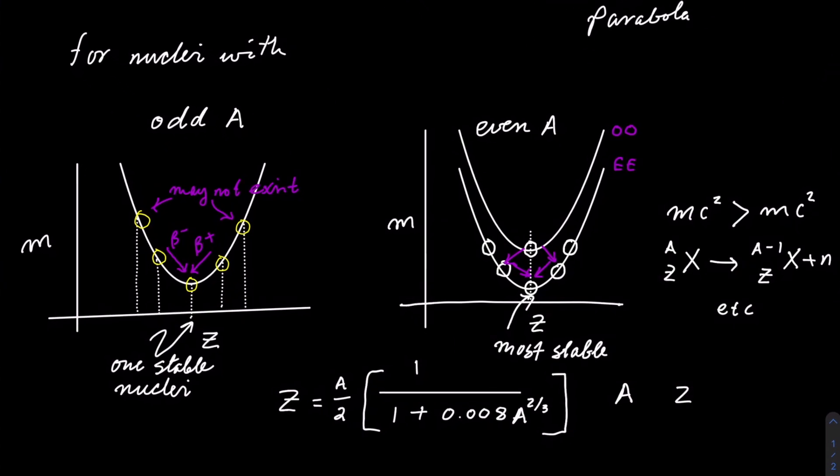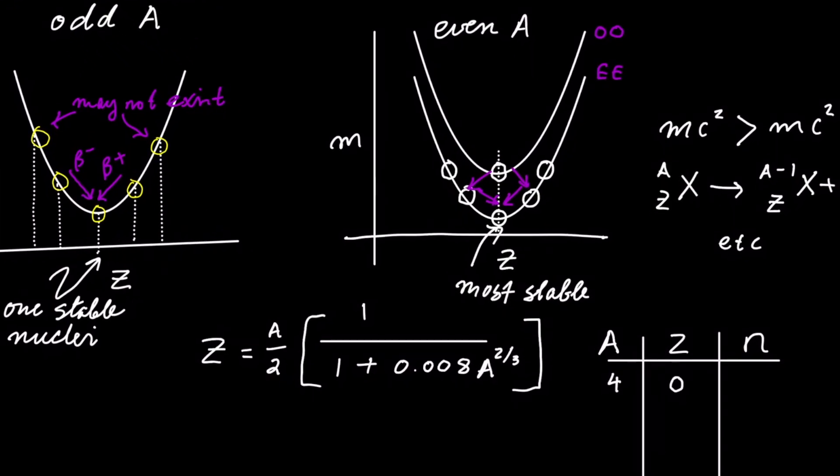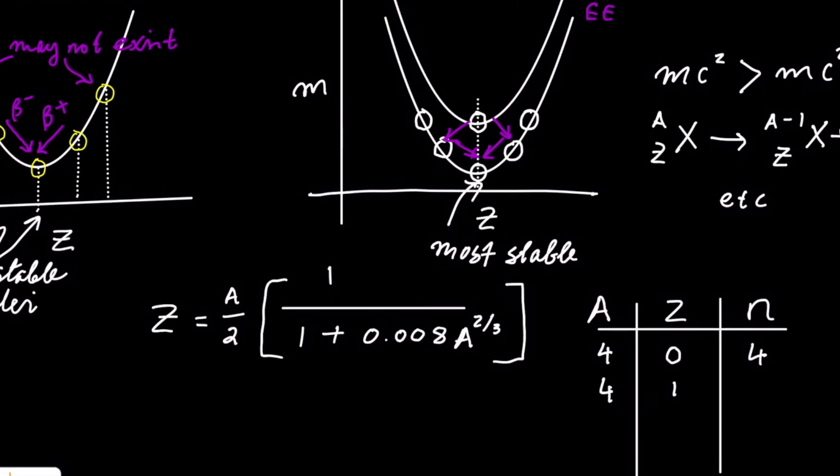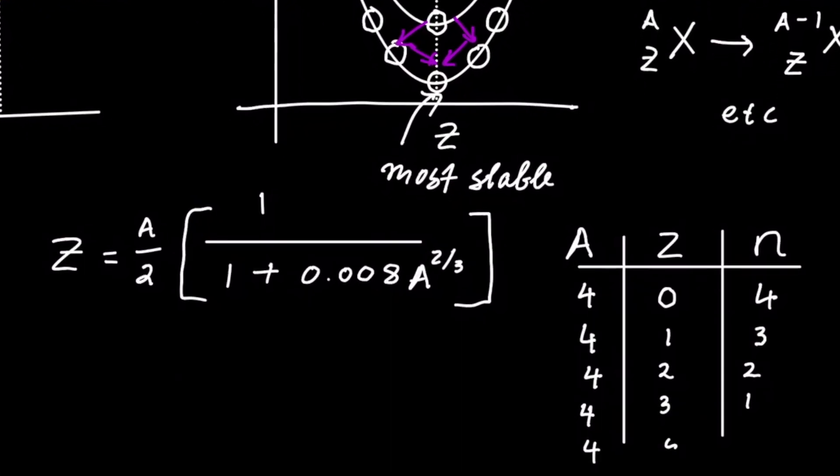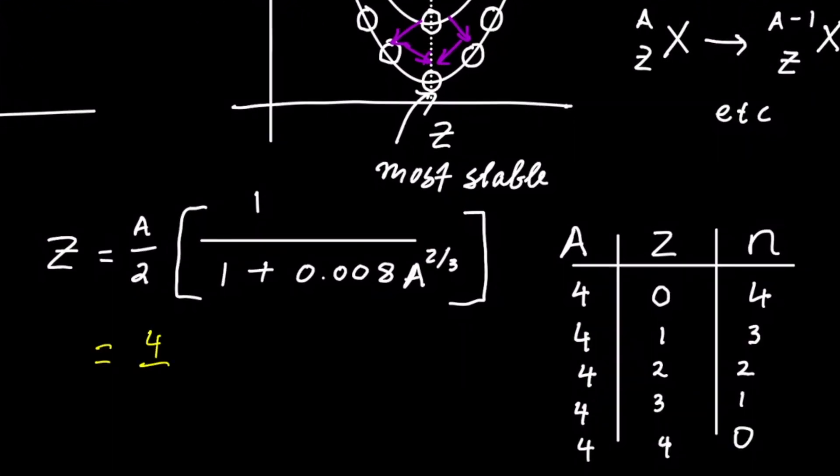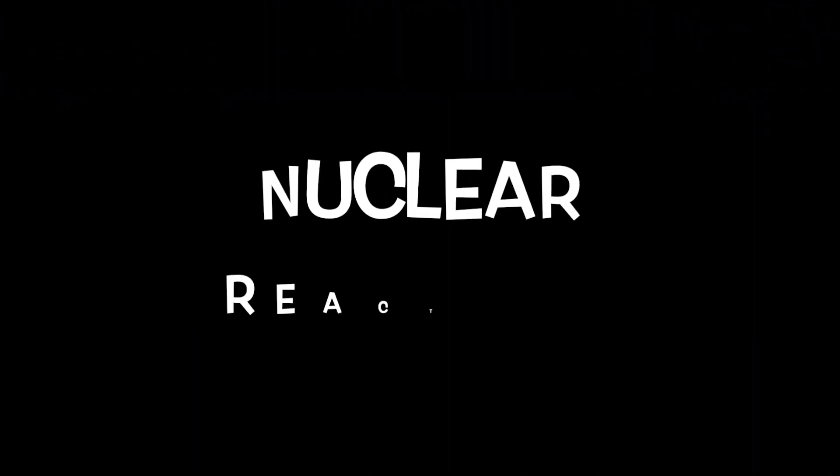Now when you take an example, A equal to 4, there could be a number of combinations. The question is, which of these would be stable? You can use this formula by substituting 4 for A, and you will find that the number of protons come to 1.96, which is 2 protons and 2 neutrons.